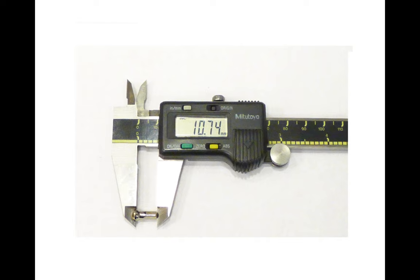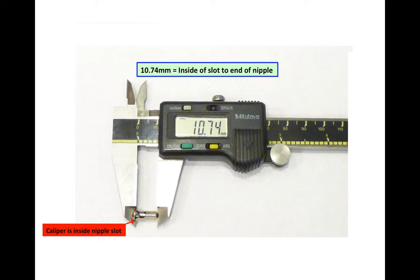Here I'm measuring nipple length. It's important to note that the caliper is inside the nipple slot. So I'm measuring a distance of 10.74 millimeters, which is the inside of the slot to the end of the nipple.